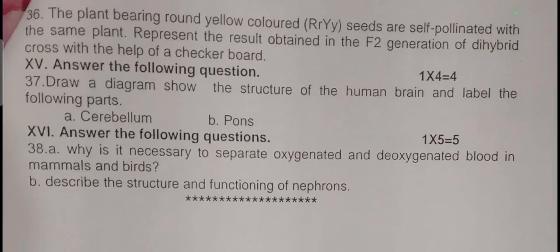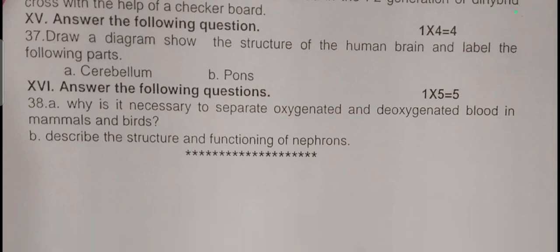A plant bearing round yellow colored seeds (RRYY) is self-pollinated. Show the result obtained in the F2 generation of the dihybrid cross with the help of a checker board. Four mark question: Draw the diagram to show the structure of human brain and label the following parts: cerebellum and pons. Five mark question: Why is it necessary to separate oxygenated and deoxygenated blood in mammals and birds? Describe the structure and functioning of nephrons. This is your model question paper, sorry, this is your district level preparatory question paper.